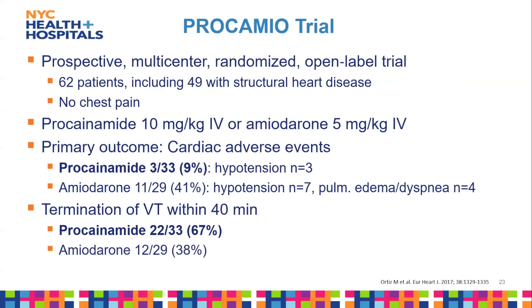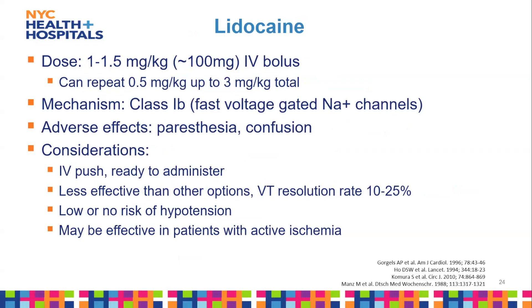The PROCAMIO trial — a prospective multicenter randomized open-label trial — compared procainamide versus amiodarone in 62 patients, including 49 with structural heart disease. The primary outcome was cardiac adverse events, and procainamide had fewer adverse events than amiodarone and a higher rate of V-tach termination within 40 minutes. This supports procainamide as a potentially better option that we could start using here.